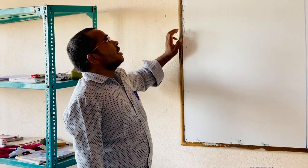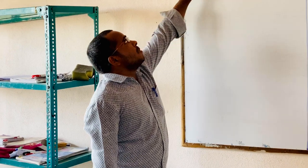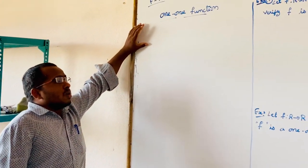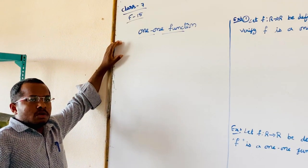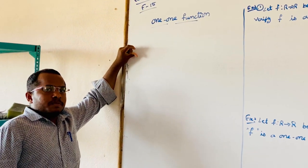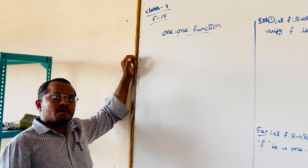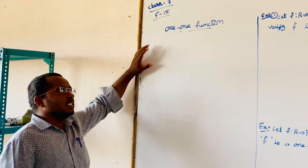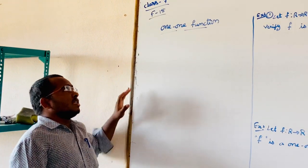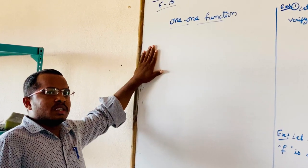Good morning. Today's session is the 7th class. The topic is the one-one function, Phase number F50. A function F mapping A to B is called a one-one function if different elements of A have different F-images in B. It is also called an injective function.